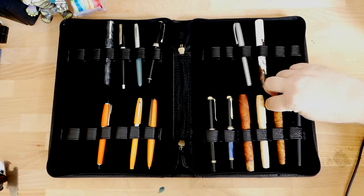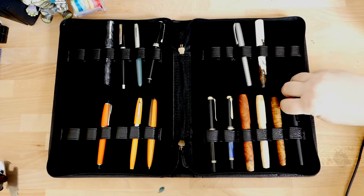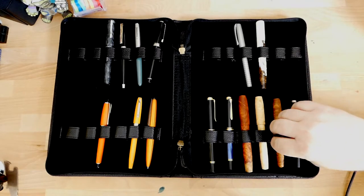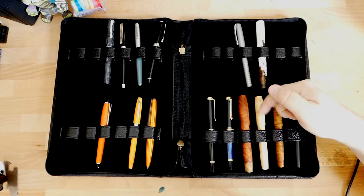Now these ones, these little Ryan Krusac L14s, are held in very well, as is this tactile turned gist. But all of these are smaller pens, and they're held in very well by that little elastic. So as long as you can get your pen under the elastic, it's great.